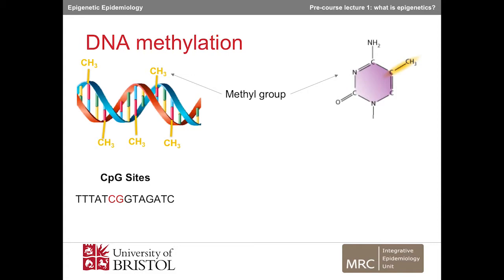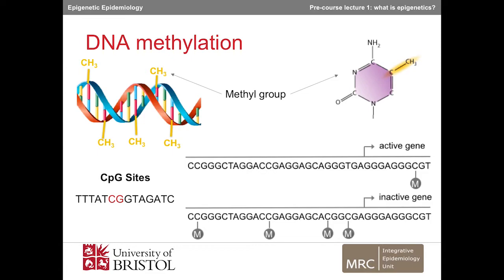The P just means that there's a phosphate bond between the C and the methyl group. There are about 30 million CpGs in a human genome. CpG sites tend to be clustered in CpG islands, often at the promoter regions of genes, which is where the transcription machinery binds. When DNA is methylated in the promoter region of a gene, this usually blocks transcription of the gene and leads to gene silencing — so the gene is effectively switched off or inactive. When DNA methylation occurs outside of the promoter region, in intergenic regions or at repetitive elements, its primary role might be to maintain genomic integrity rather than change gene expression.